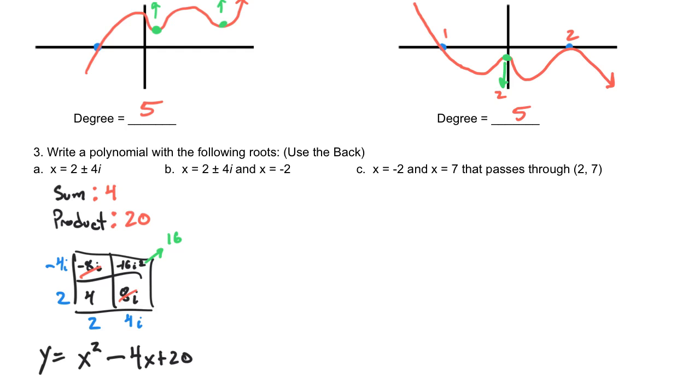or x equals negative 2, excuse me. But since I started you with that part to speed it up, the process, now what you're going to do is, we already know the quadratic that comes from 2 plus or minus 4i.